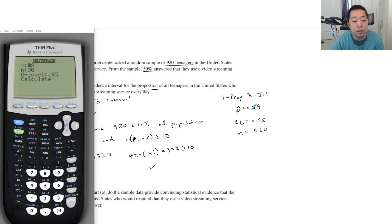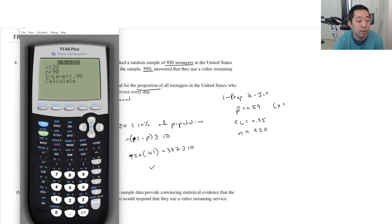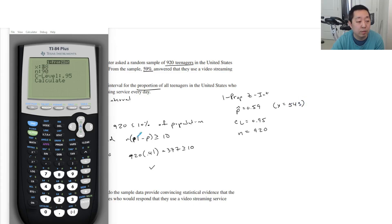N is 920. And, oh, so yeah. So you could say the number of successes you had was what we calculated with here, which was 543. You want to use a whole integer for this one if you want to use this method. Or you could do it by hand. N is 920. C level is 0.95. And then calculate.